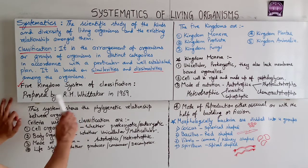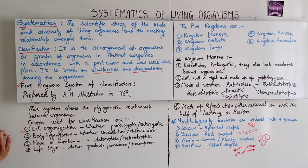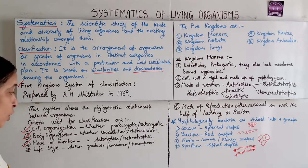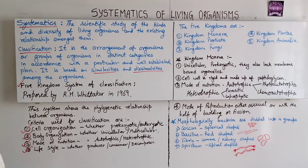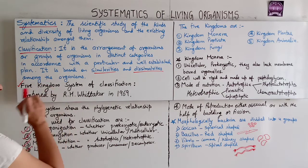Whittaker used a few criteria for classification. First, cell organization — whether the organism is prokaryotic or eukaryotic. Next, body organization — whether unicellular or multicellular. Then, mode of nutrition — whether autotrophic or heterotrophic. And finally, lifestyle — whether the organism is a producer, consumer, or decomposer.